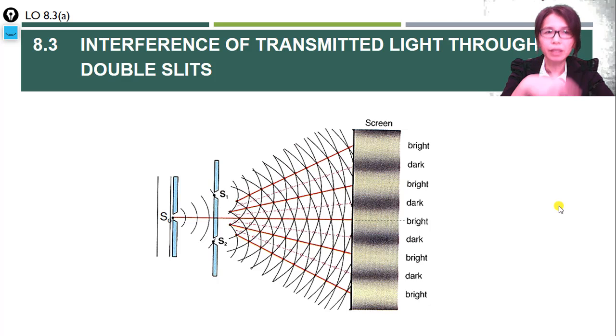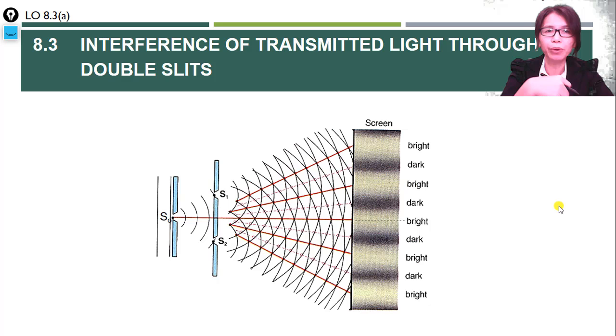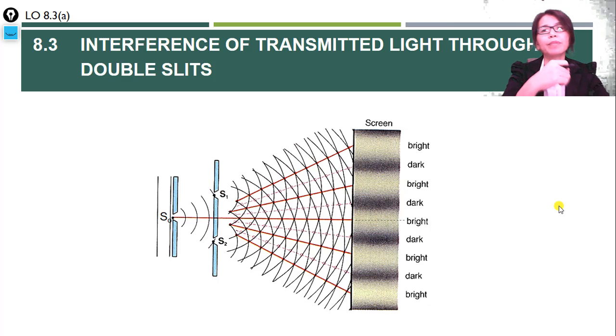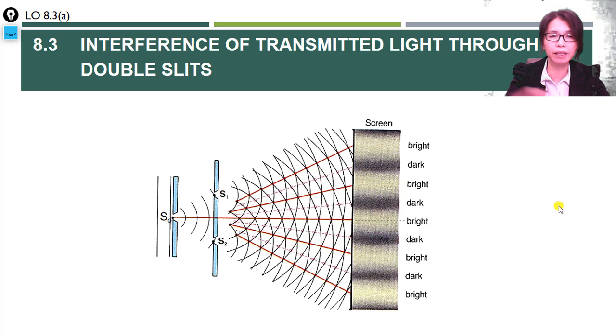Hello! In this video, we are going to focus on 8.3: interference of transmitted light through double slit.